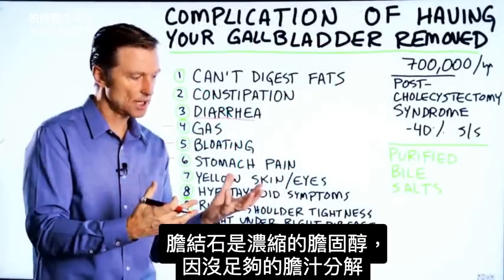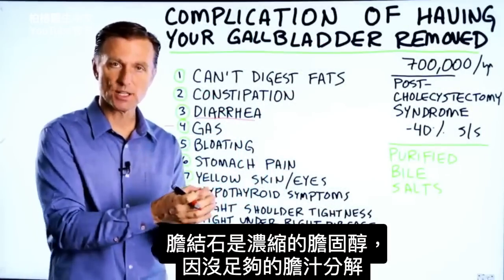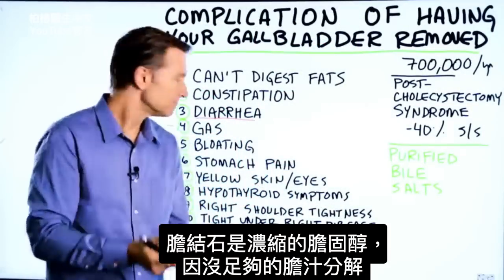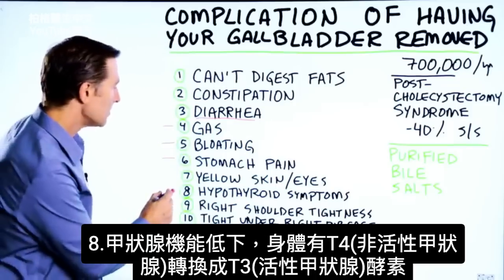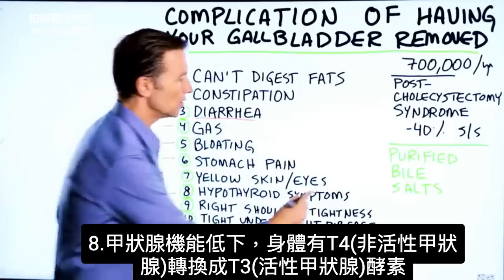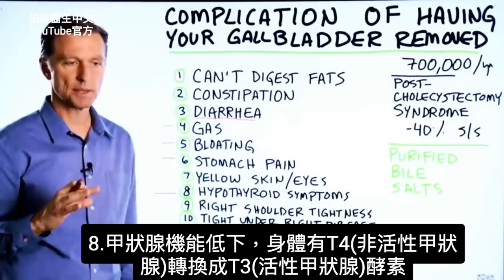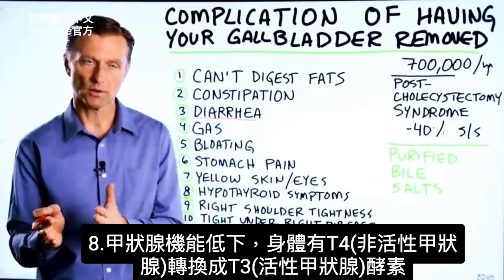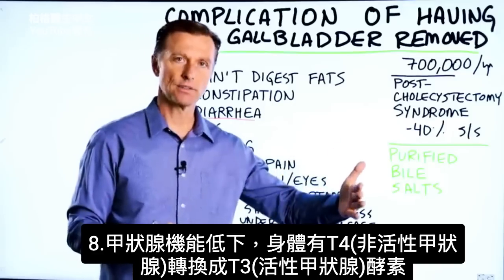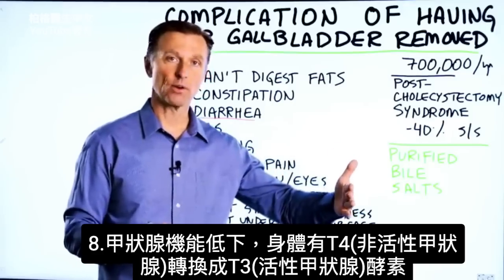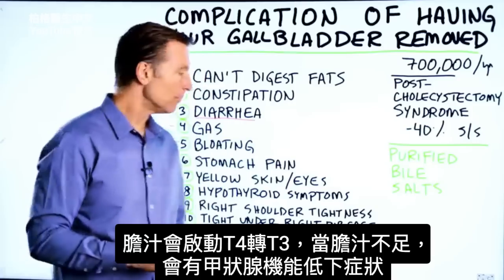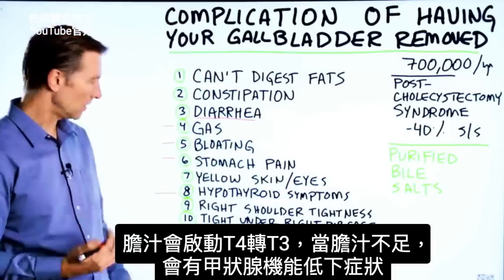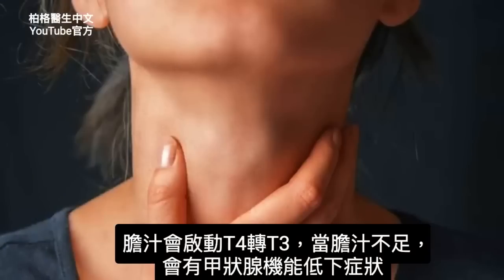Especially if there's sludge or a gallstone sitting in there, bile will help to dissolve it. One of the causes of a gallstone is concentrated cholesterol because there's not enough bile to keep it broken down. Another complication is hypothyroidism. Your body has certain enzymes that convert T4, the inactive version of the thyroid hormone, to T3, the active form. Bile triggers that conversion, so without enough bile it can create hypothyroid symptoms.